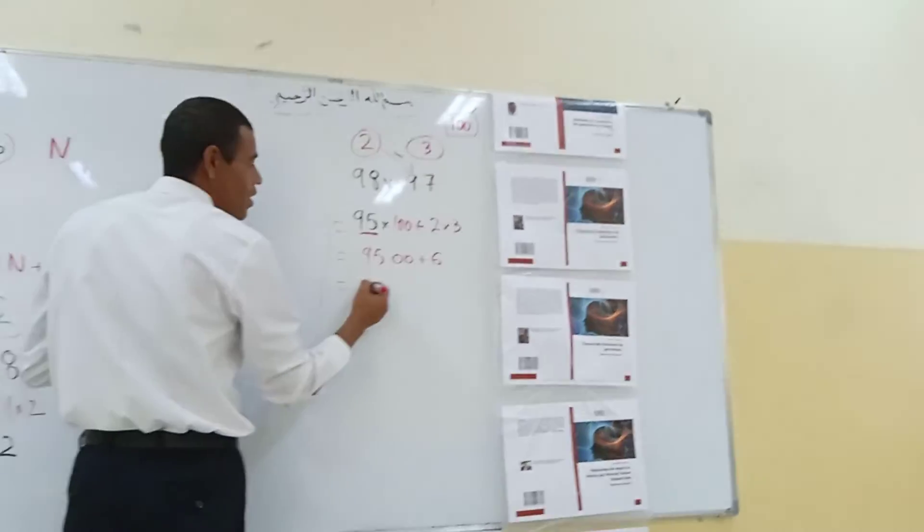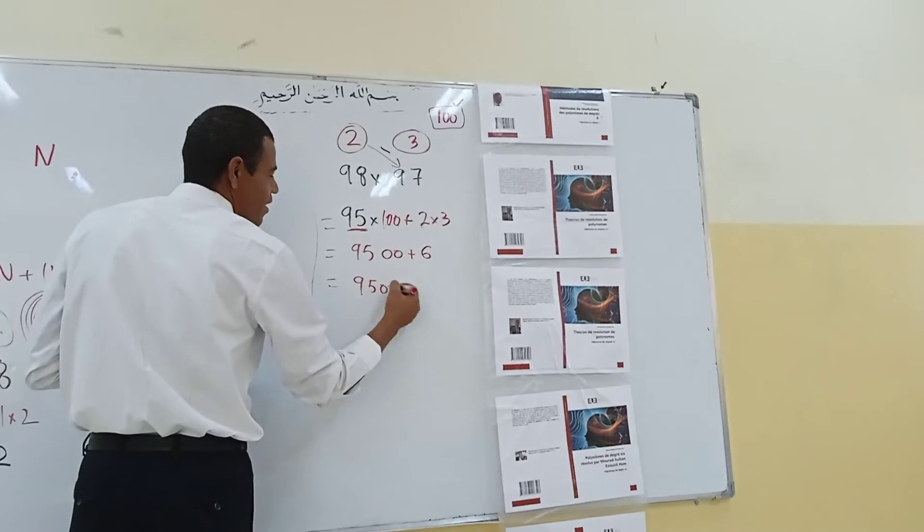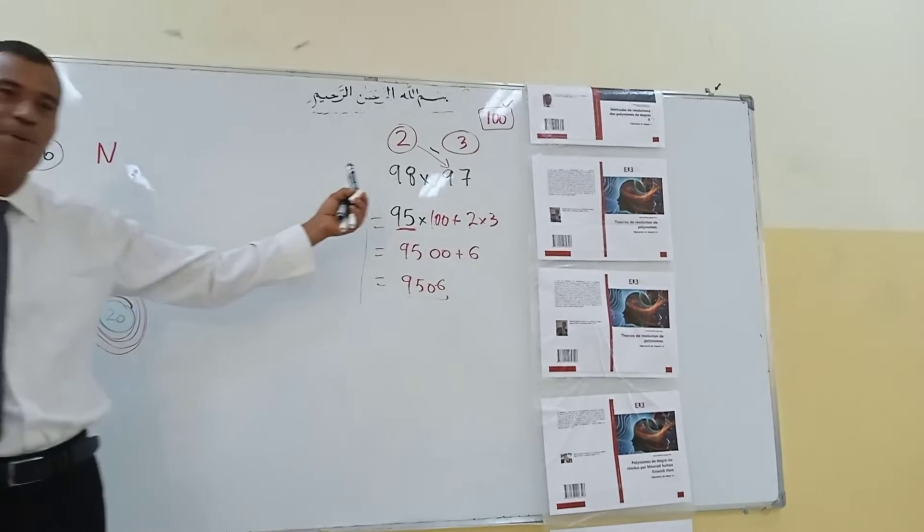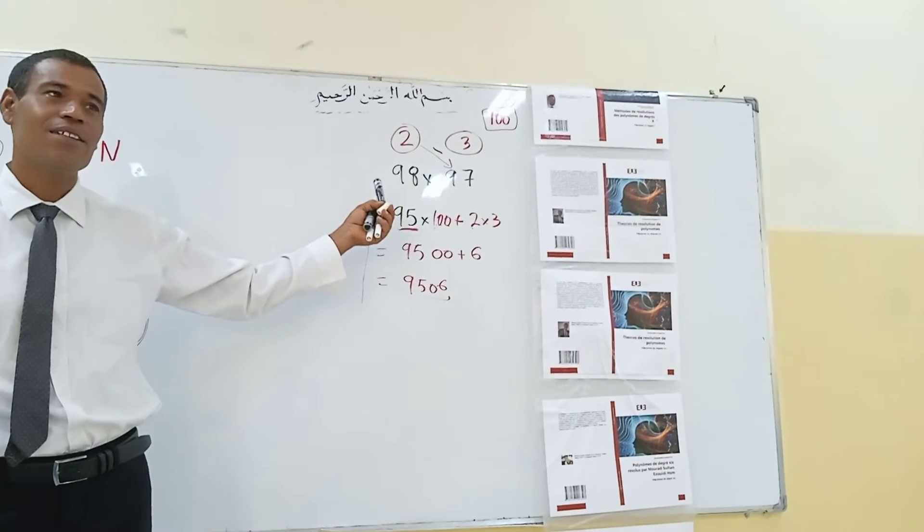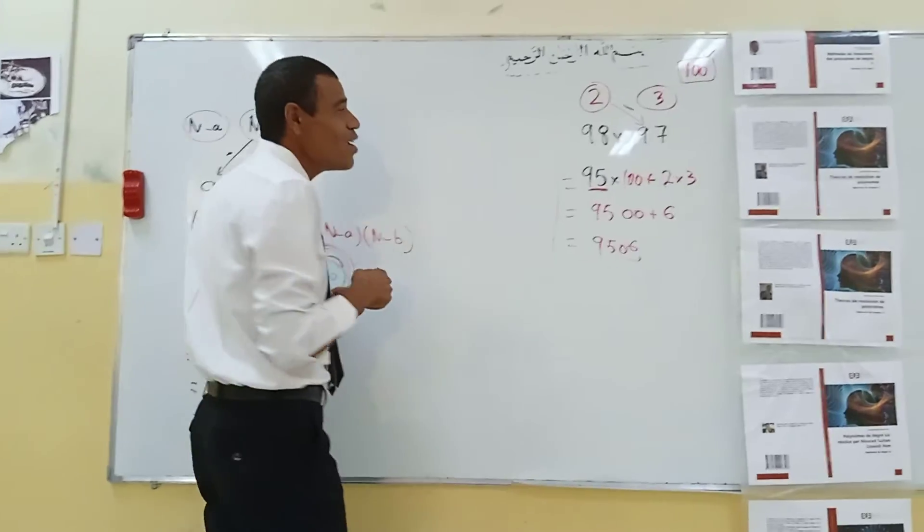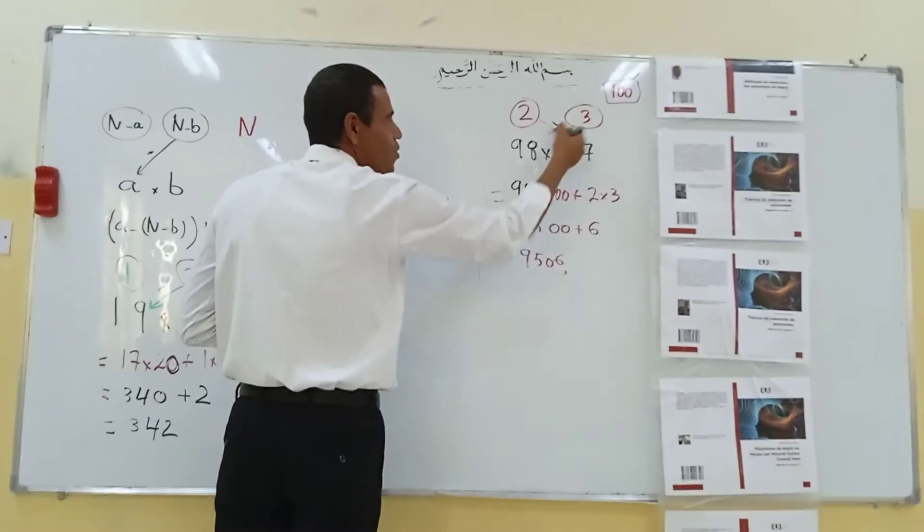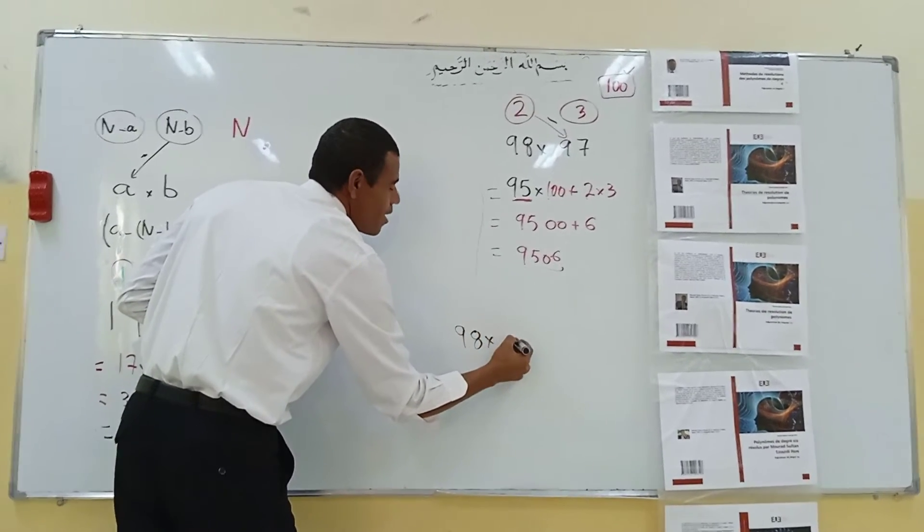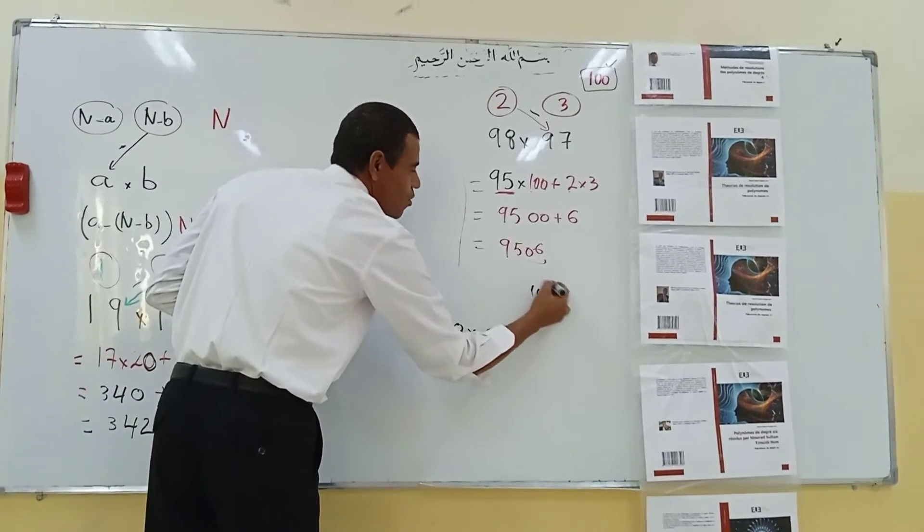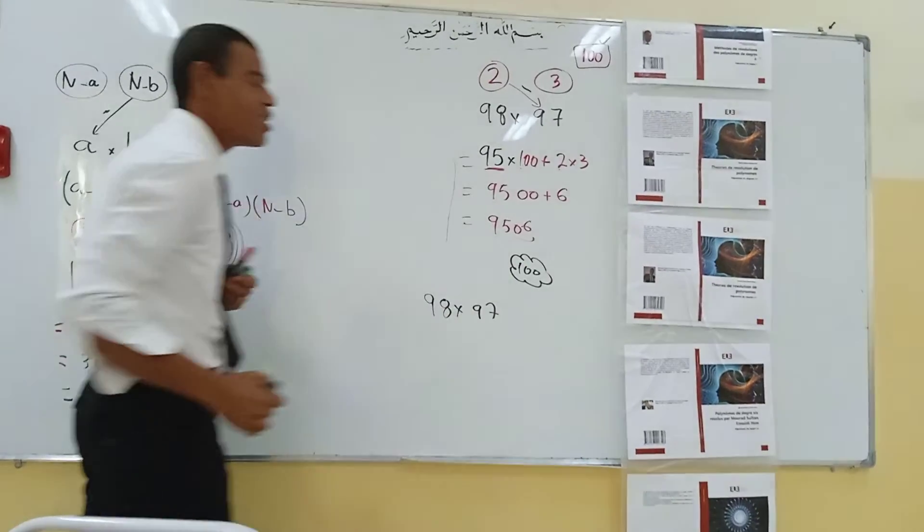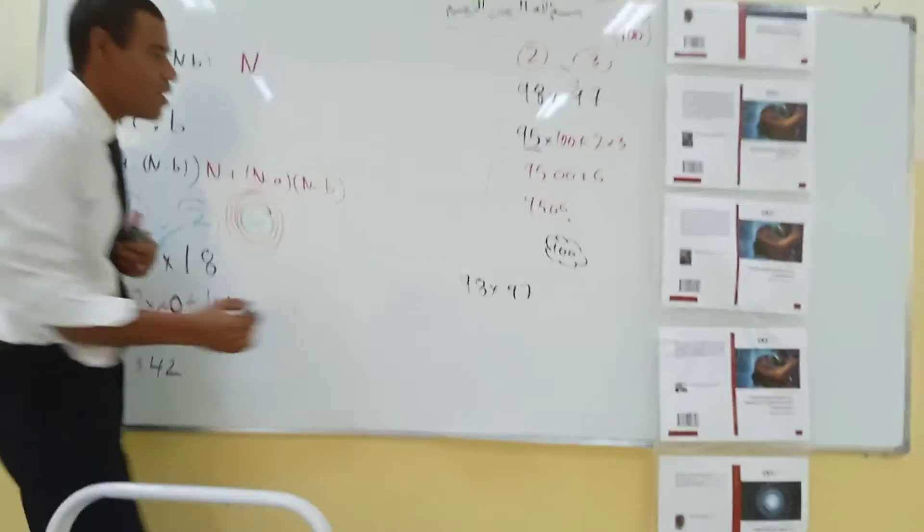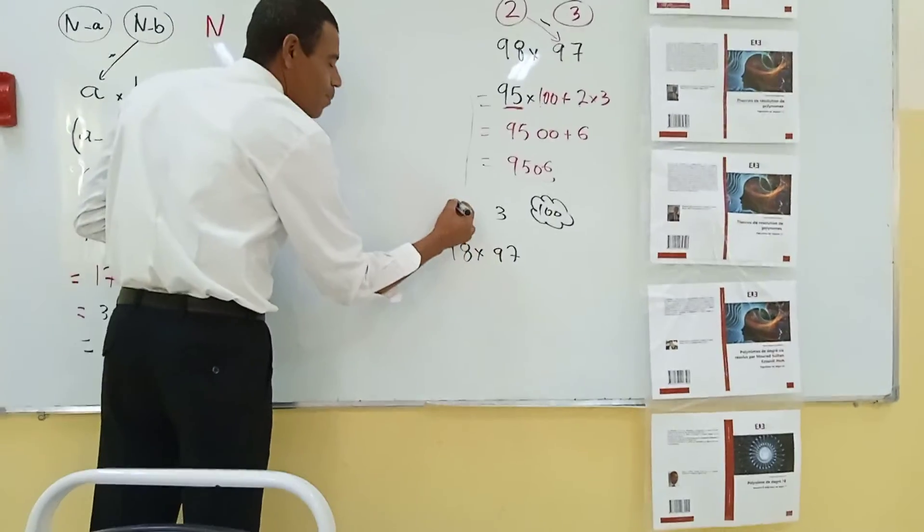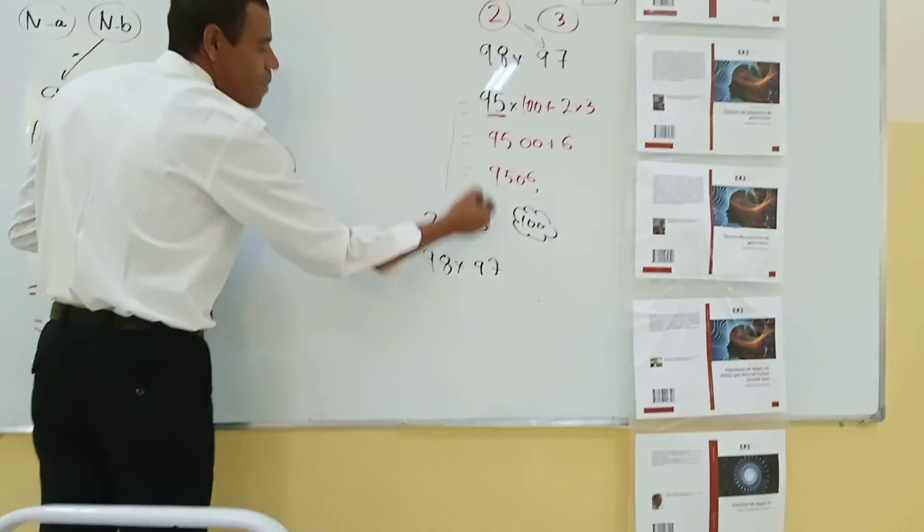Now one student will tell me this method is symmetrical. Wait, let's check. We need here the first row like that. I will write here 98 multiply by 97. This is 100. You should put it into consideration. Never forget this one. Therefore 97 plus 3, 98 plus 2.